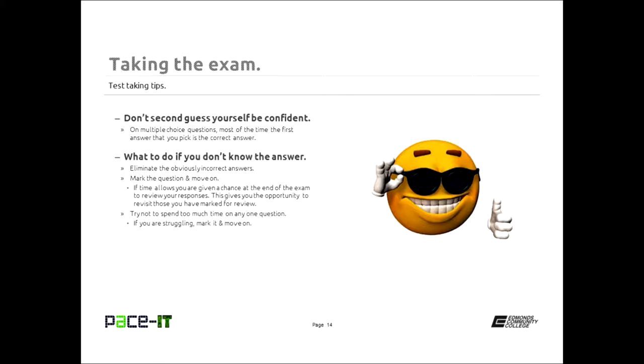What do you do if you don't know the answer? If it's multiple choice, eliminate the obviously incorrect answers and narrow down the field. That should help you pick the answer. If that still doesn't do it for you, you're given the opportunity on CompTIA exams to mark the question. You mark it, fill the little checkbox, and move on. If time allows at the end of the exam, you're given a chance to go back and review your responses. This gives you the opportunity to revisit those questions that you've marked for review. That way you get the majority of questions done that you do know, and then you can go back and try to answer the questions you weren't too sure about.